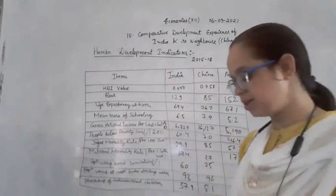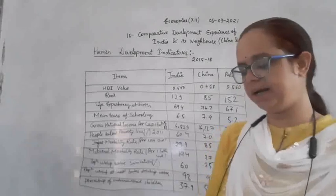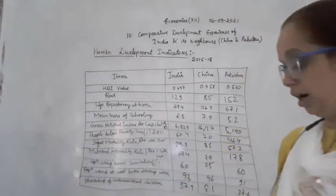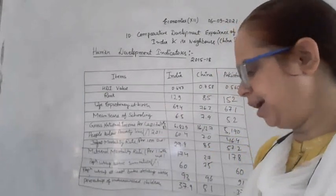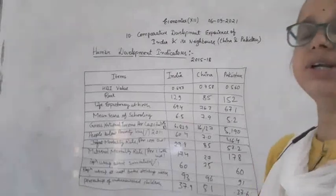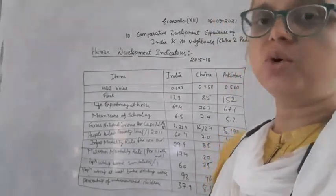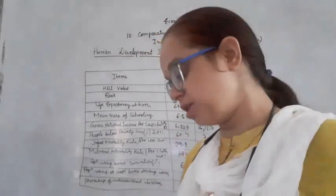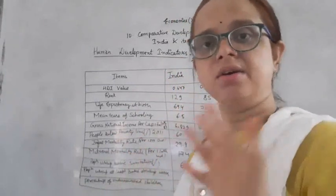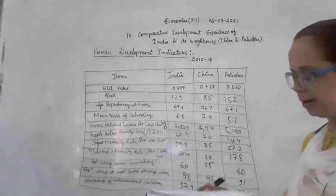High maternal mortality rate implies a failure of a country to provide sufficient and competent health facilities during childbirth. If maternal mortality rate is high, it shows the country is not providing sufficient and competent health facilities. For 1 lakh live births, 27 women are dying in China.